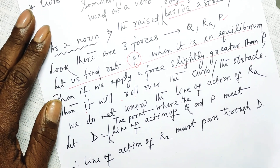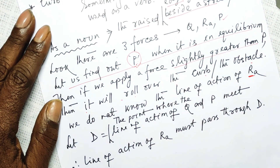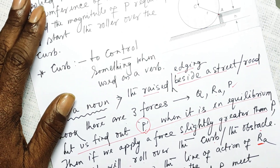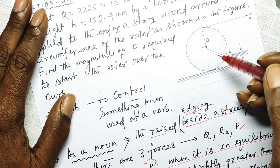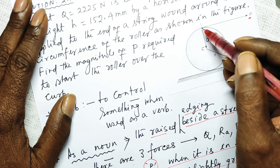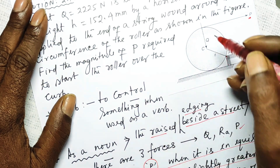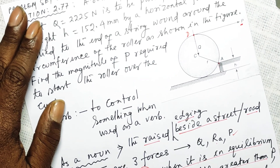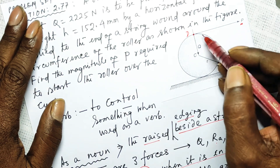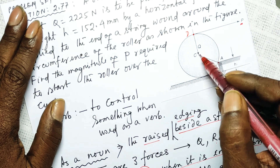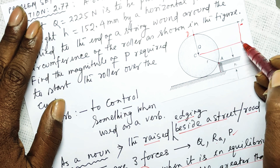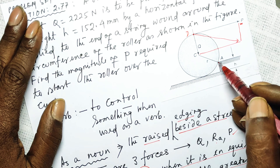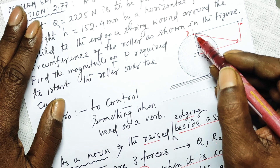We don't know the line of action of RA, so we extend the line of action of Q and the line of action of P — they meet at a point, let this point be D. Since P is to one side and Q is to the other side, the resultant of P and Q will pass through D, so the reaction force from point A must also pass through this point D.